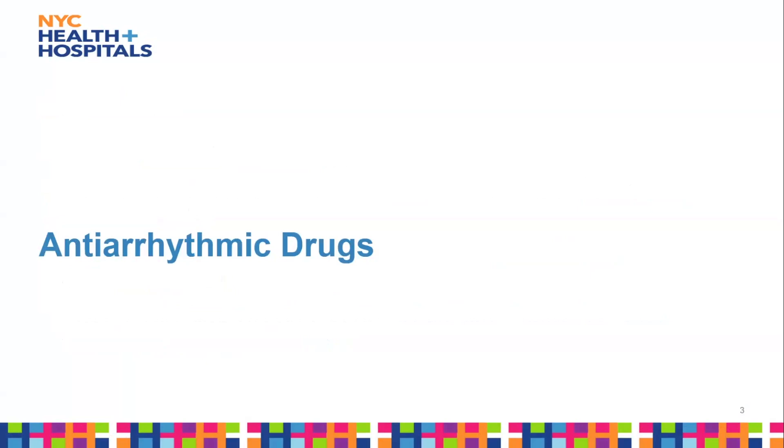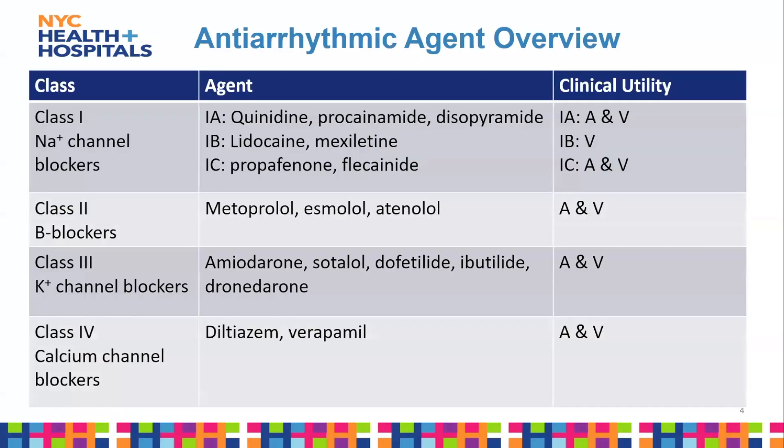Starting with antiarrhythmic drugs, they're classified into four different classes based on their mechanism of action. There are a ton of drugs but in this lecture I'll be focusing on a handful of them. Your first drugs are Class 1, which are your sodium channel blockers, and those can be further subdivided into Class 1a, 1b, and 1c.